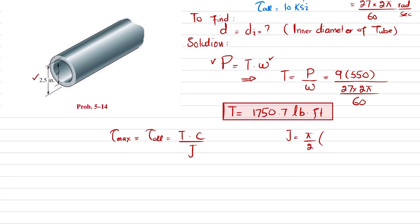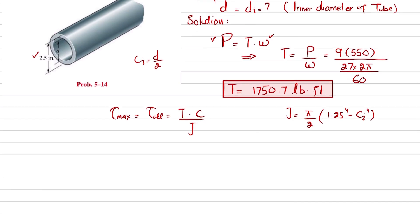So you can calculate J. J is equal to π/2 times c_outer, which is 2.5 divided by 2, which will be 1.25 to the power 4, minus c_inner which is not known.